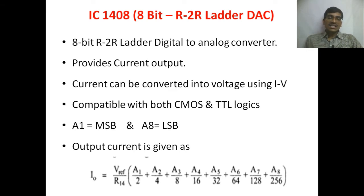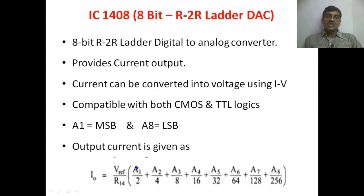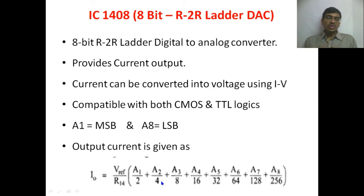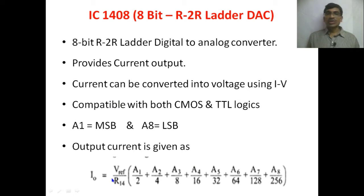This is the standard equation for a digital to analog converter — A1/2 can be written as A1×2⁻¹, A2×2⁻², and so on. Here V_reference is the reference voltage or full-scale output voltage of the DAC, and R14 is the external resistance connected to the fourteenth pin.